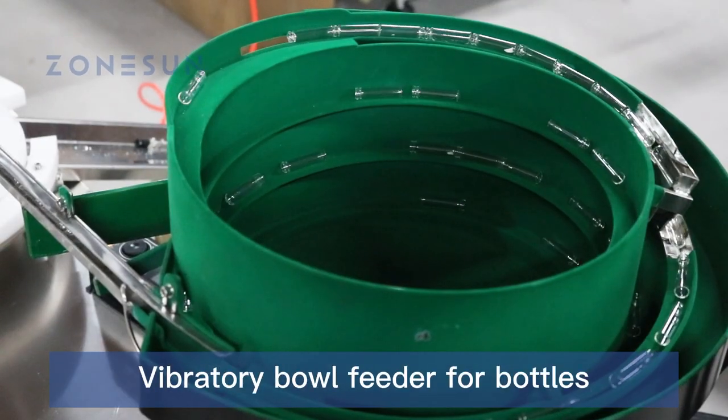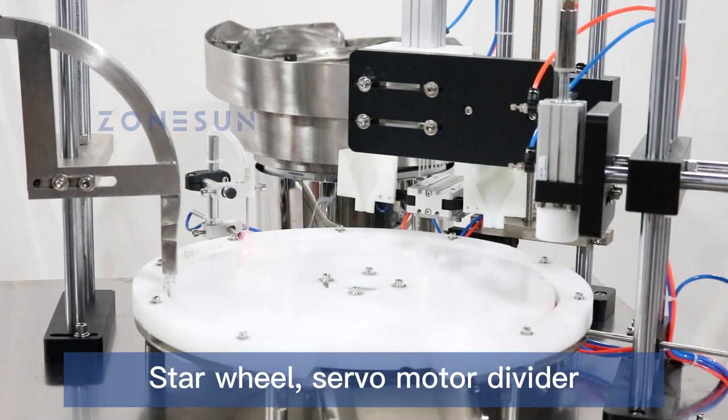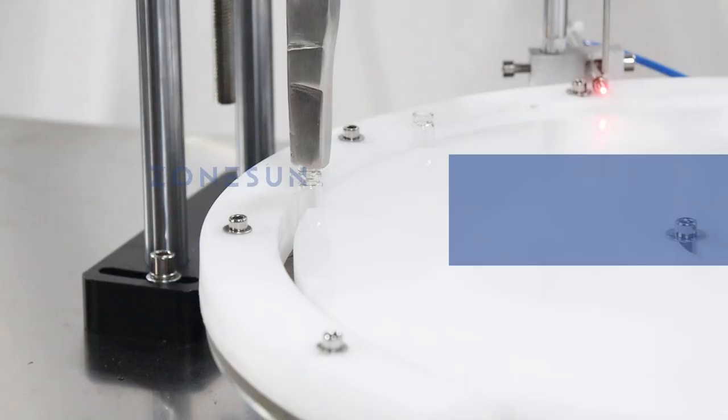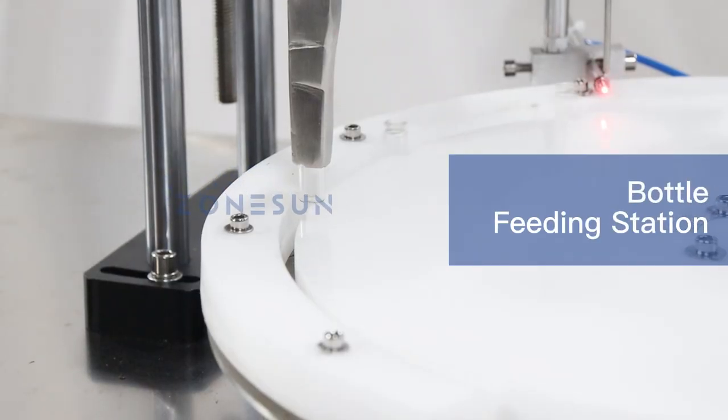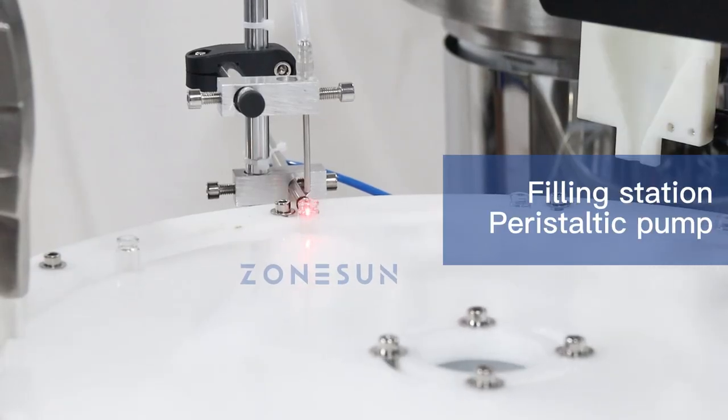Introducing our new all-in-one packaging solution for perfume. It features a star wheel design with multiple workstations driven by a servo-driven indexer for precise and efficient operation. The filling station uses a peristaltic pump to transfer liquid.